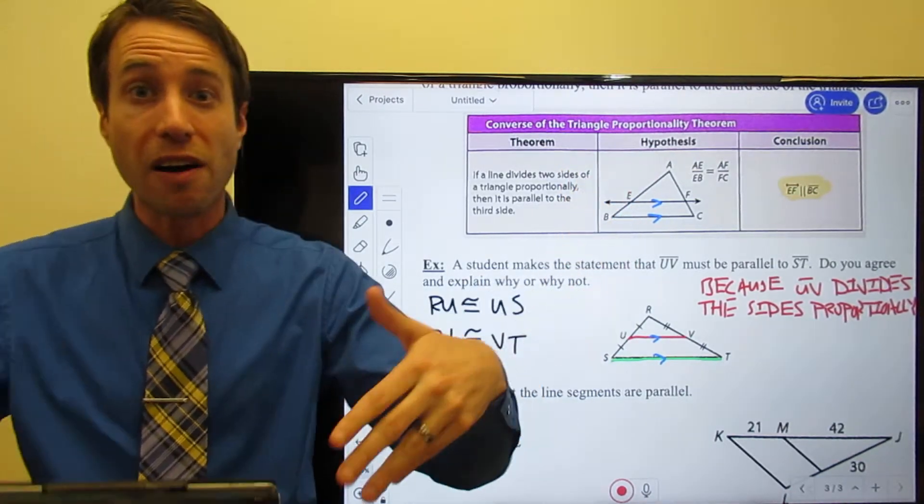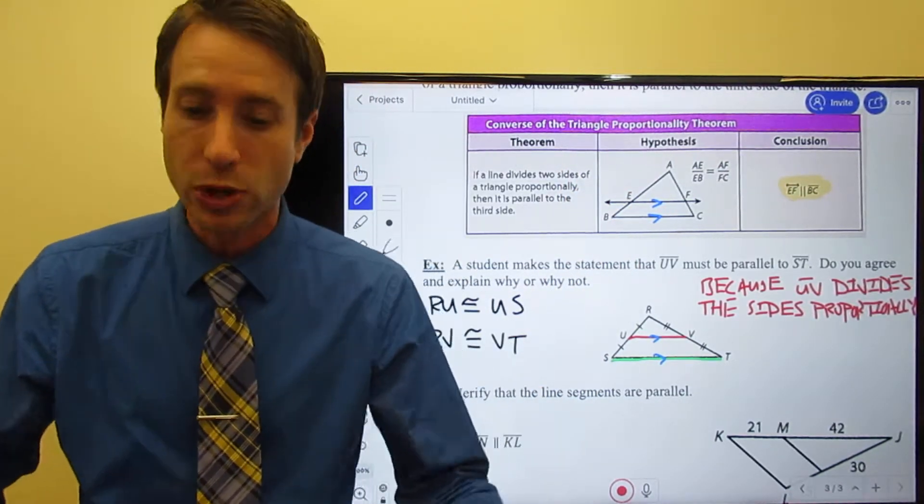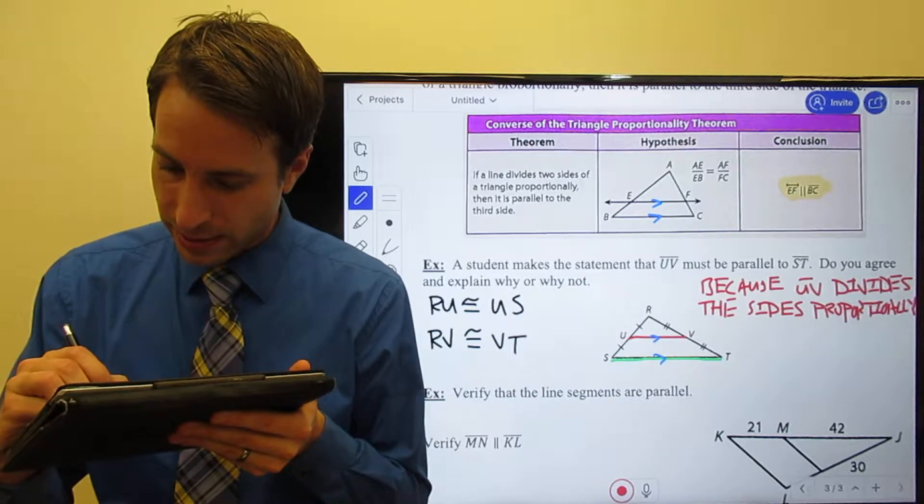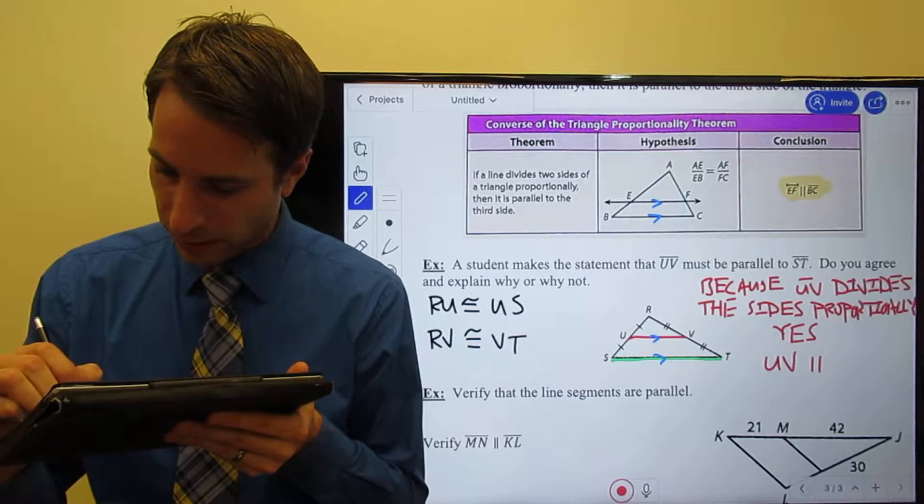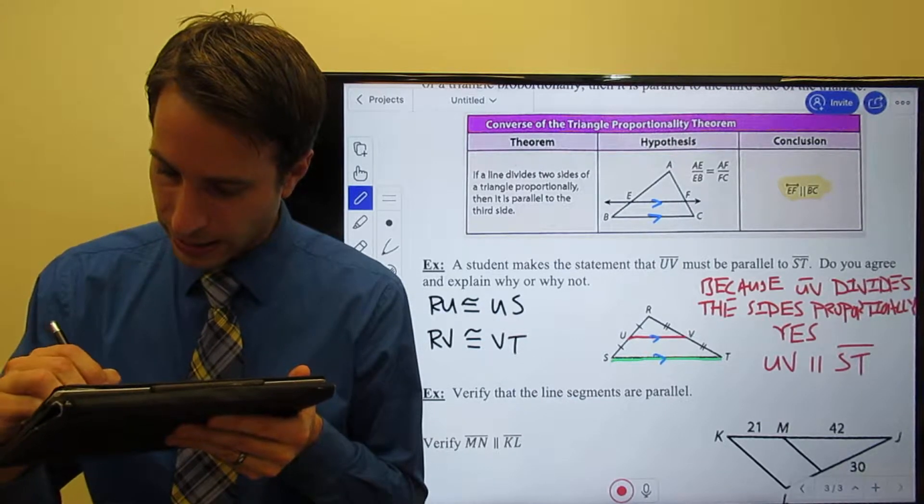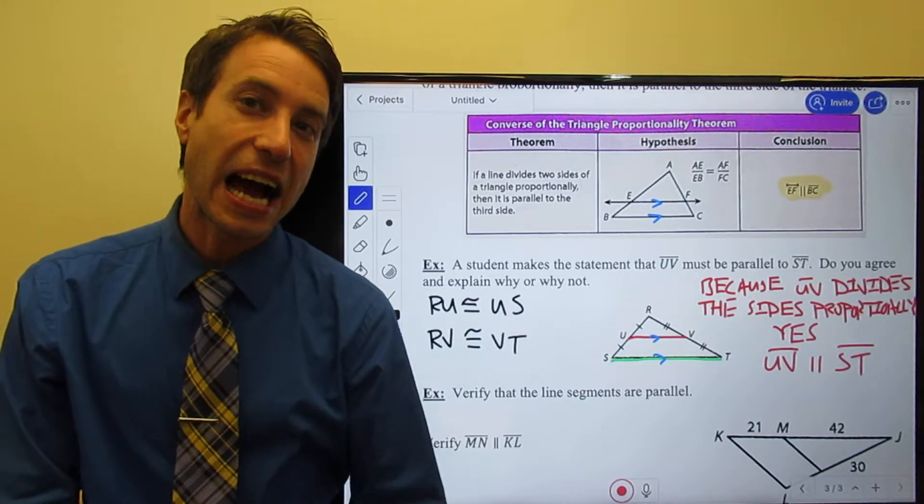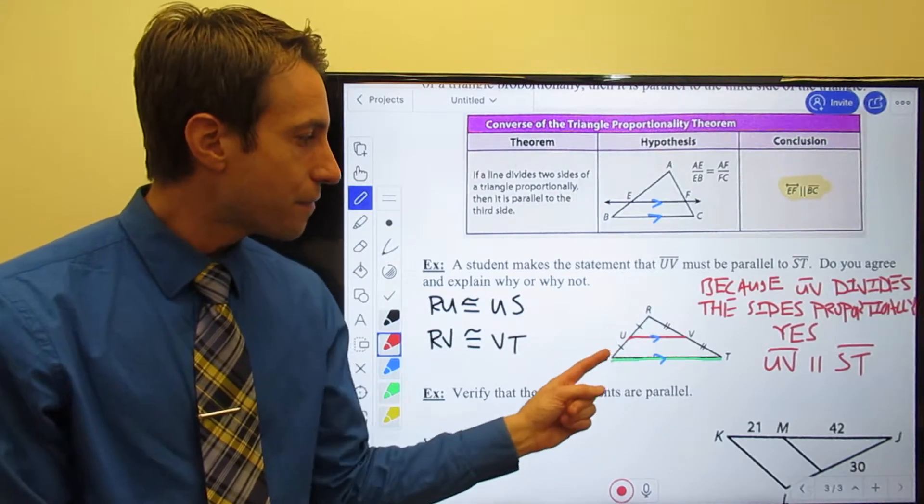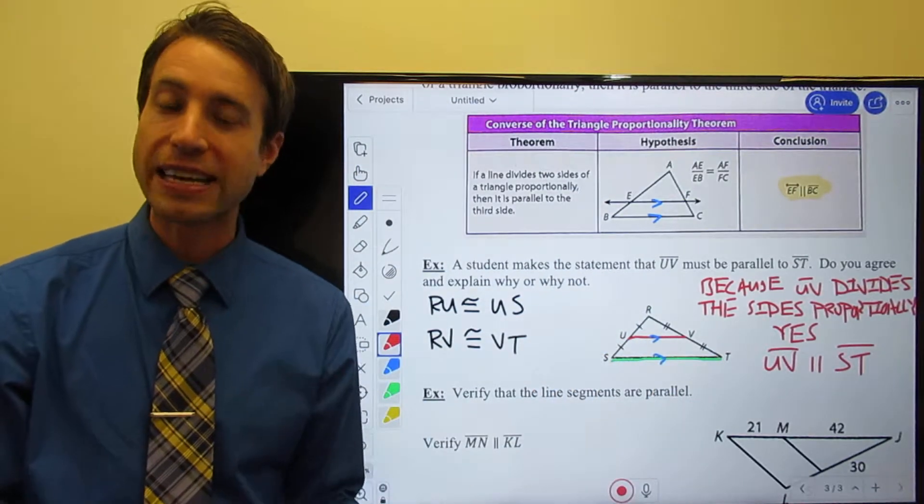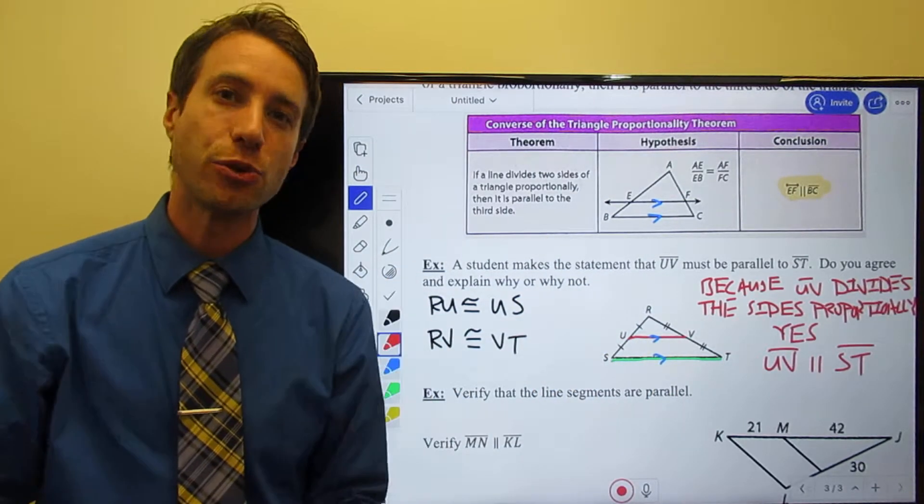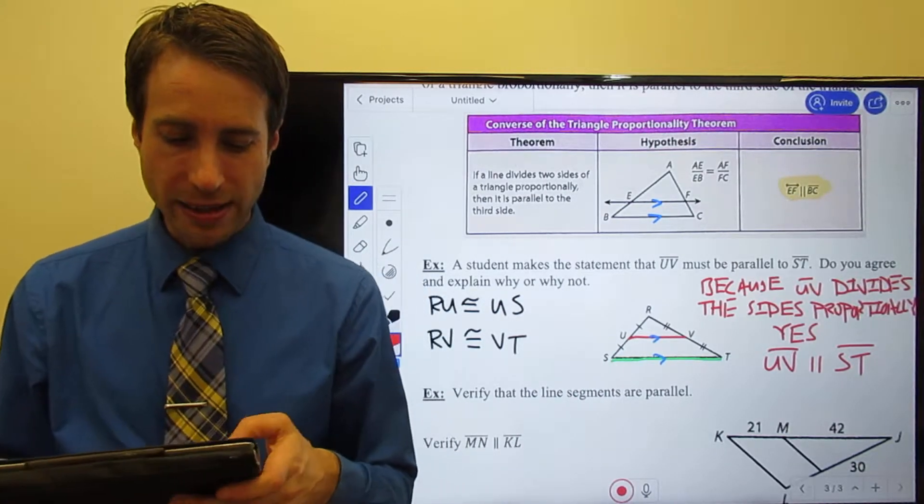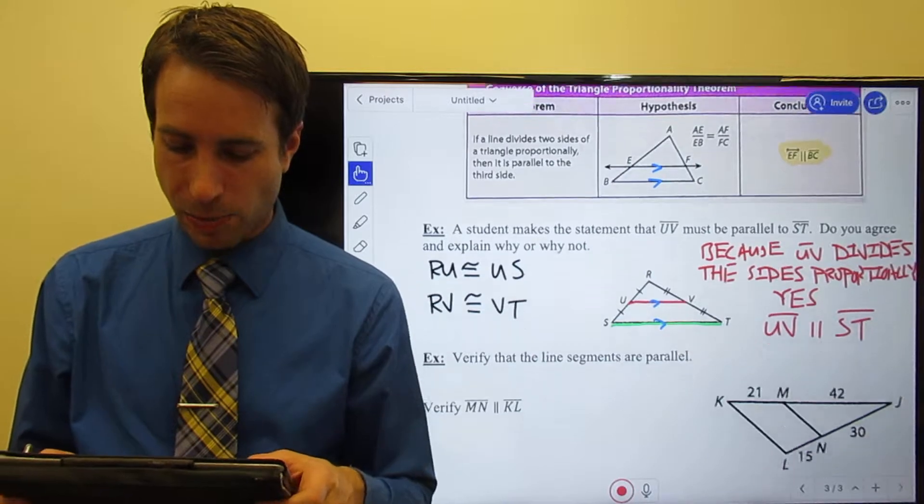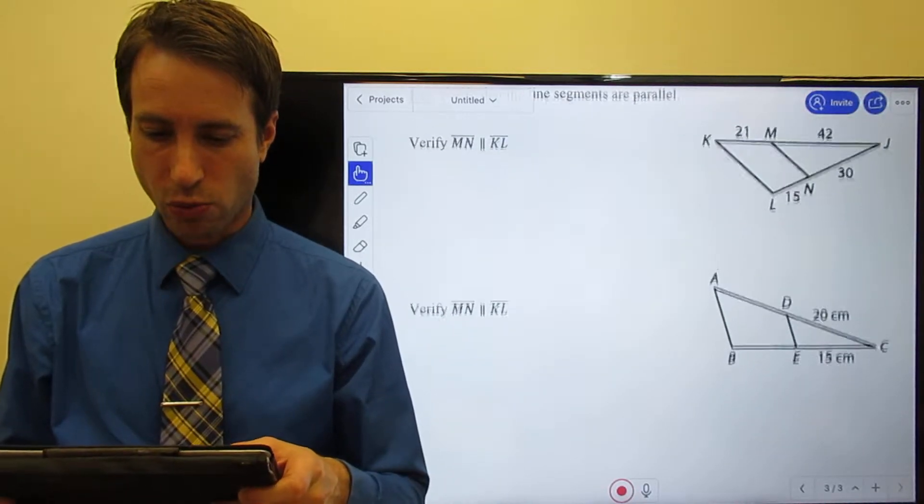So because UV divides the sides proportionally, the converse of the triangle proportionality theorem would say, yes, UV is parallel to ST. So that's it. That's how this theorem is going to work. If you know that the sides are divided proportionally, then you can say that those lines are parallel. Let me show you how this is going to work in a couple of example problems that I've got for you guys right here.